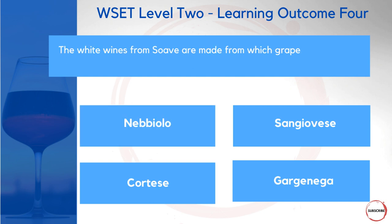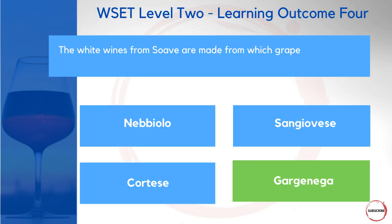The white wines from Soave are made from which grape? Is it Nebbiolo, Sangiovese, Cortese, or Garganega? This is the sort of question you really need to get familiar with. It might be a good idea to use flashcards — write regions on one set and grapes on the other, and play a game of pairs to get familiar with what's grown where. The answer here is Garganega.